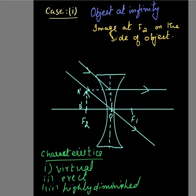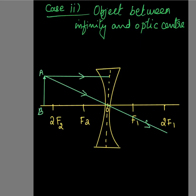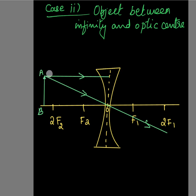Now for Case 2: when the object is anywhere between infinity and the optic center — it could be beyond 2F2, at 2F2, between 2F2 and F2, or anywhere on the principal axis between the optic center and infinity. Here the object AB is placed beyond 2F2. Two rays are used: one ray passes through the optic center and is undeviated, and the second ray is parallel to the principal axis.